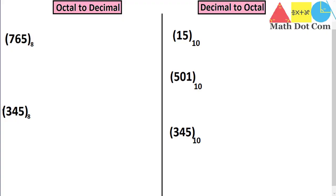Hello everyone. Today's topic is the conversion of number systems — from the octal number system to the decimal number system. As you know, in octal we have numbers from 0 to 7, and in decimal we have numbers from 0 to 9. Here we are given the octal number 765 and we have to convert it into decimal.